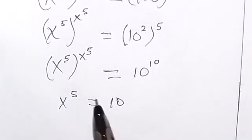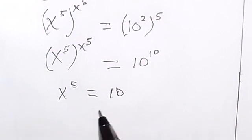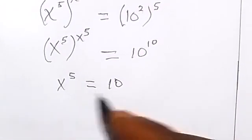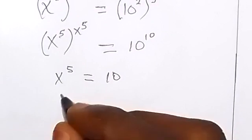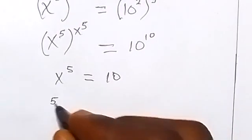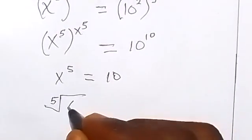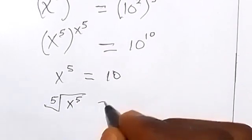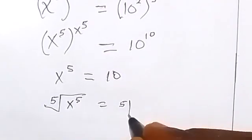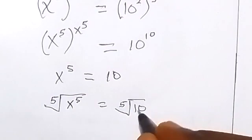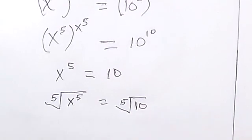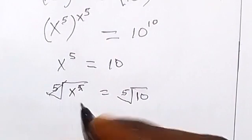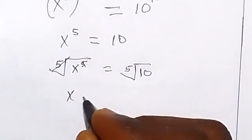It's clear that x raised to power 5 equals to 10. For us to get x, we take the fifth root of both sides. The fifth root on this side: x raised to power 5 equals to the fifth root of 10. The fifth root and the raised to power 5 cancel each other.